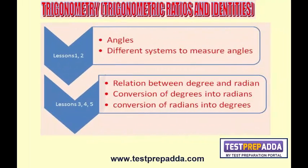in the previous sessions of Trigonometry, we talked about some basic things of Trigonometry like angles. There we talked about different systems to measure angles. We talked about the relation between degrees and radians, conversion of degrees into radians, radians into degrees.